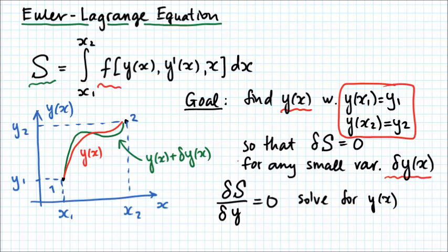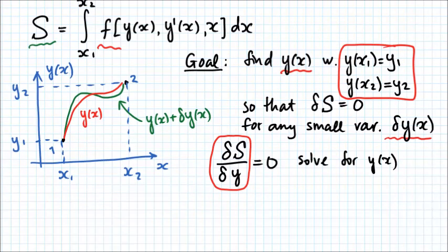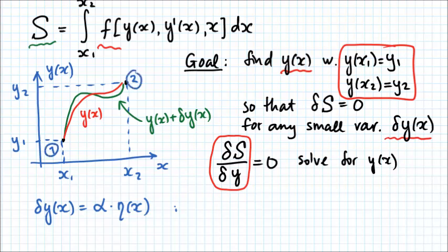Even though it looks simple, this object is a bit tricky. First of all, delta y of x is a function, and we don't know how to divide by a function when finding derivatives. The way out is to write delta y of x in terms of a number alpha times some arbitrary function eta of x. This function eta of x must satisfy the boundary conditions — it must vanish at x1 and x2 — because otherwise we can never add it to y of x and still pass through points 1 and 2.